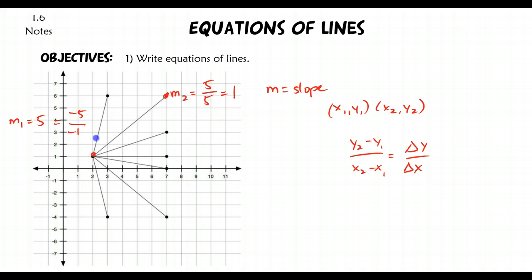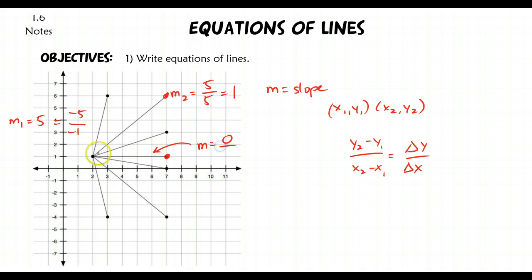I'll let you check the slopes for each of those if you'd like. The one I actually want to talk about is this line here. If I'm trying to get from this point to this point, I have a rise of 0 — I'm not actually going up at all. So I have a rise of 0 and a run of 1, 2, 3, 4, 5, giving an overall slope of 0.